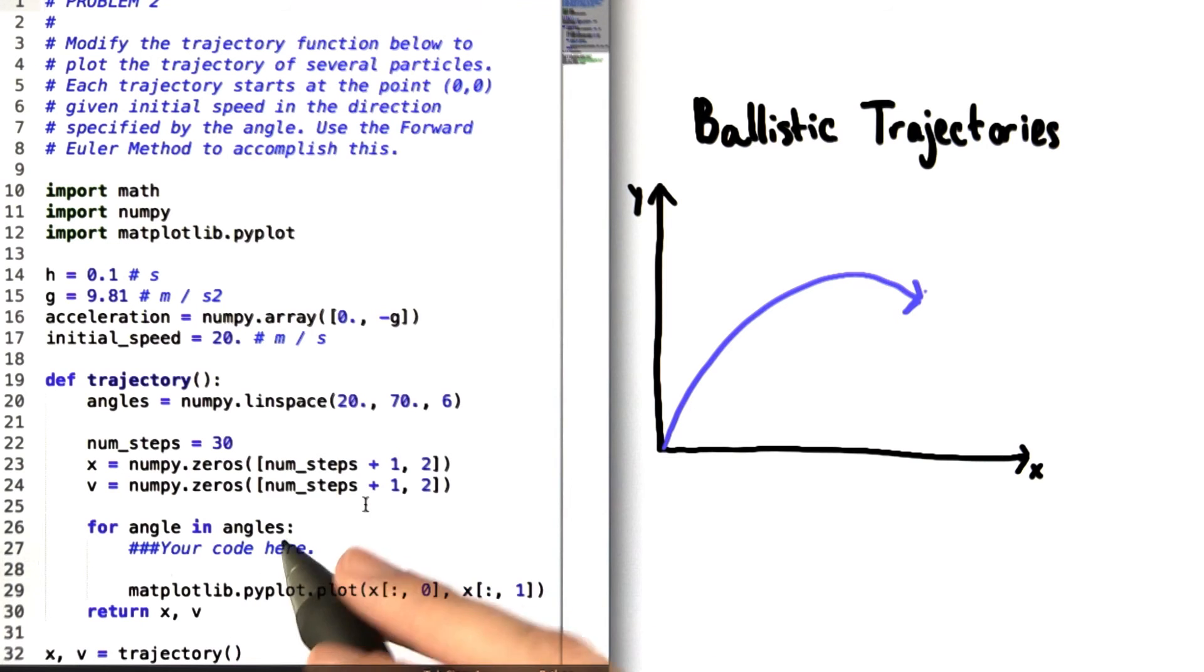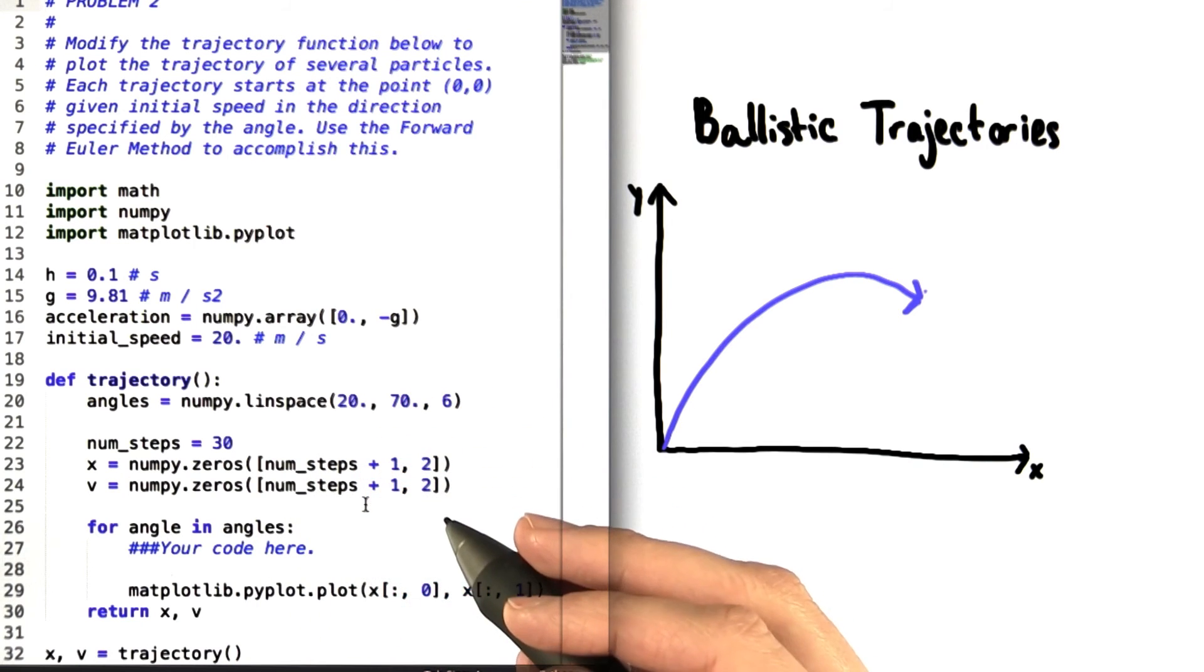Your job is to find equations for the position and velocity of the particle that show how changing the initial takeoff angle of the particle changes its trajectory. Fill in your code here and good luck.